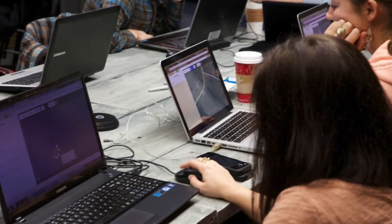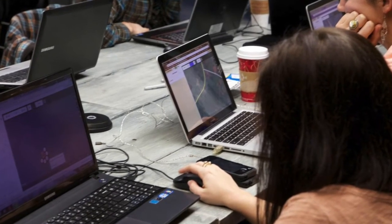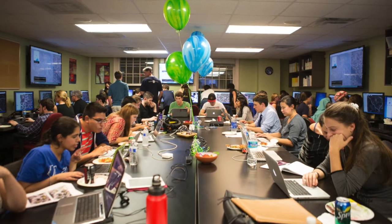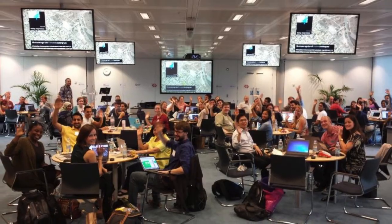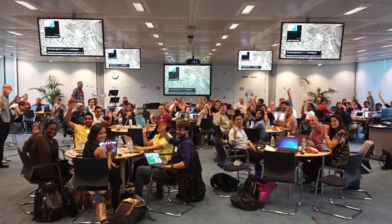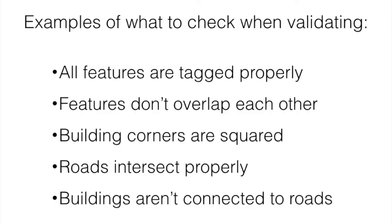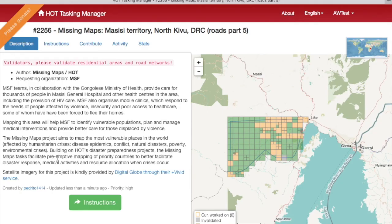Even if the data has a lot of problems, please be friendly and respectful — we want to make sure that people come back to volunteer again. Here's a list of features to be on the lookout for when validating. Make sure to read the description and instructions as well to see if there are any additional things to look for.